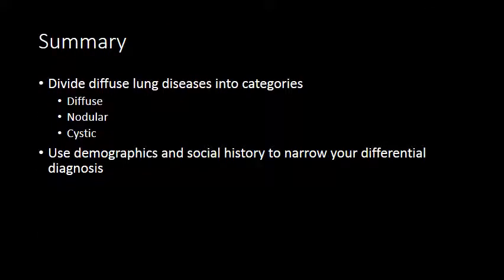In summary, think about diffuse and interstitial lung diseases in categories: diffuse ground glass opacity, nodular lung diseases (which tend to be upper lobe predominant, with the exception of asbestosis), or cystic lung disease. Once you have categorized the pattern, use patient demographics, social history, and occupational exposures to narrow your differential diagnosis.